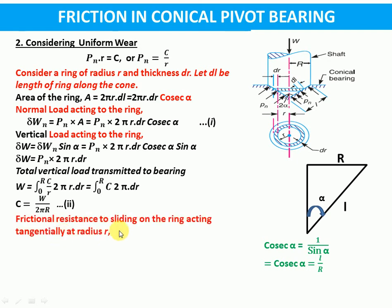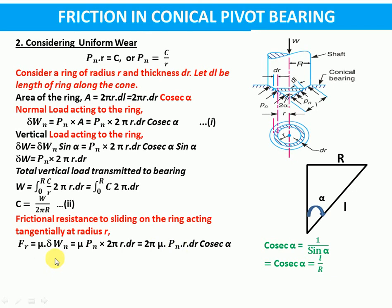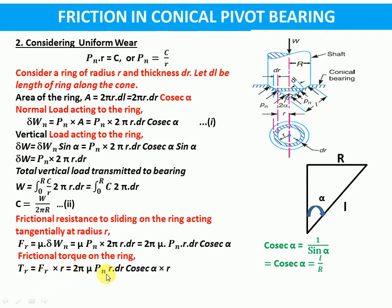Now frictional resistance to sliding will be mu times normal load, that is mu times dWn. Putting the value, we get frictional resistance as 2π·mu·pn·r·dr·cosecant alpha. Frictional torque on the ring will be frictional resistance times r, that is fr times r, so it becomes 2π·mu·pn·r·dr·cosecant alpha times r, which becomes 2π·mu·pn·r²·dr·cosecant alpha. Putting the value of pn as c by r, we get frictional torque on the ring as 2π·mu·c·r·cosecant alpha·dr.